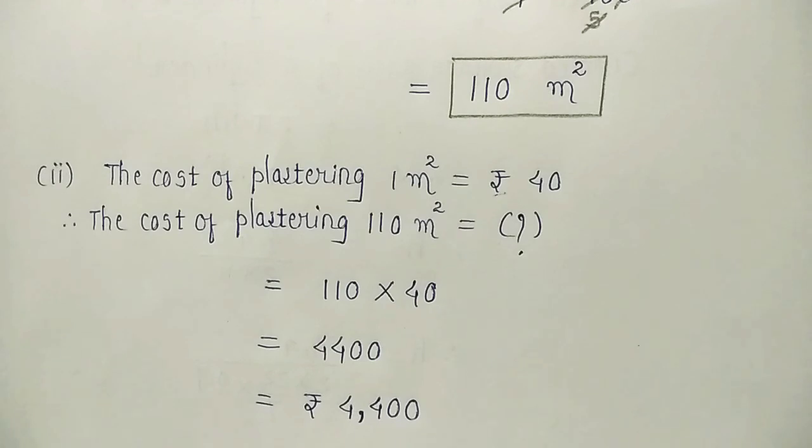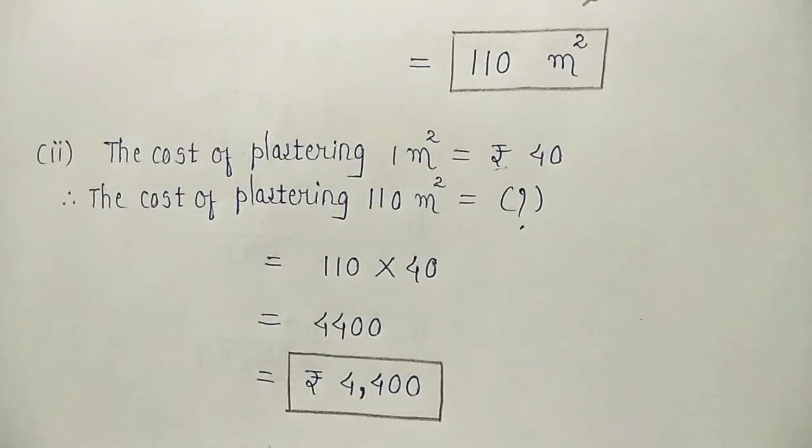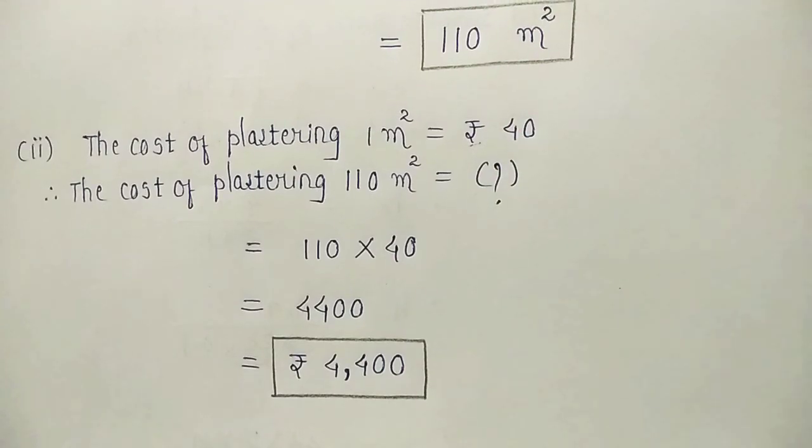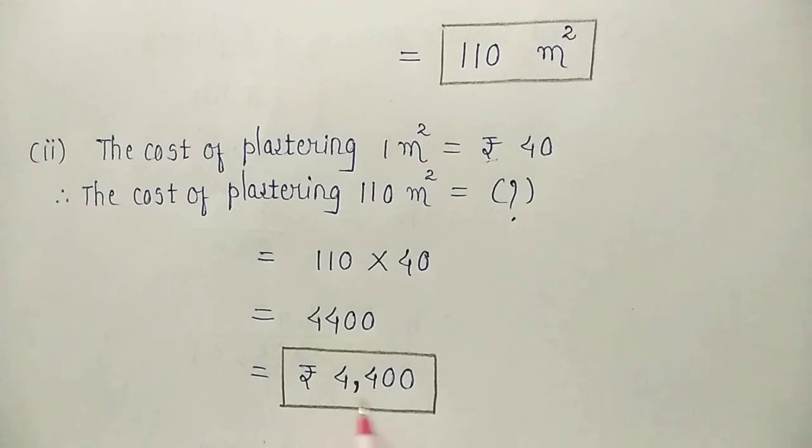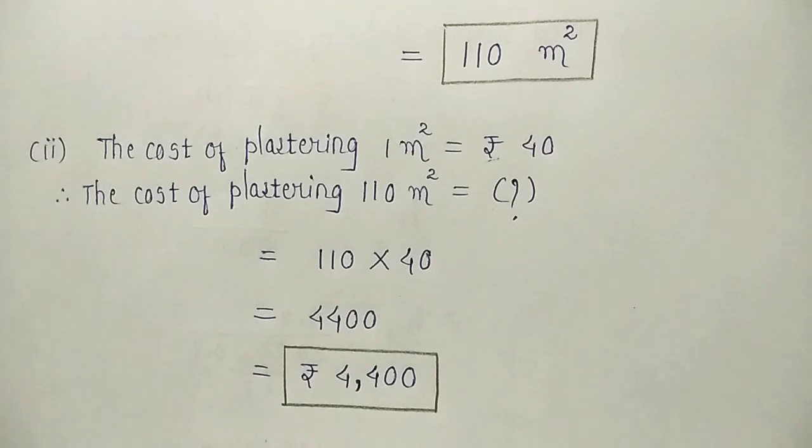Okay. So, this is the cost. We were asked to find inner curved surface area, which we got as 110 meter square, and we were asked to find the cost of plastering that we got as rupees 4400. So, this is question number 7.